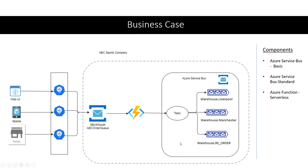So what are the components we have used in this particular business use case? We've got a retail and online platform and then an API. I'm going to focus on the components shown within the dotted square box. We've got an Azure Service Bus queue to receive incoming orders, an Azure Function to process orders and identify the right warehouse, and then it publishes to a topic subscribed by the various warehouses. We've got an Azure Service Bus Basic, an Azure Service Bus Standard, and an Azure Function serverless.